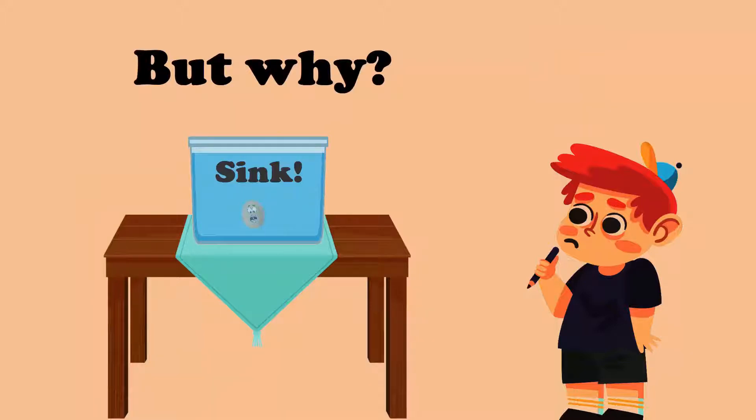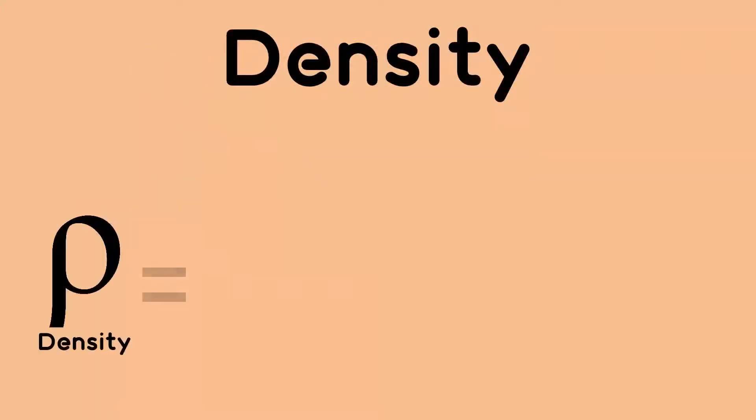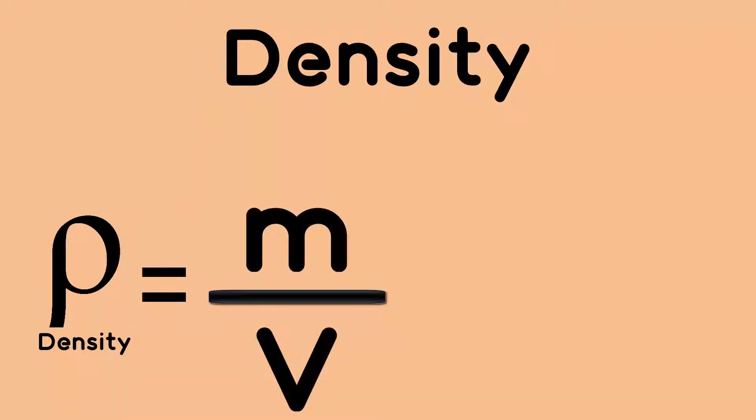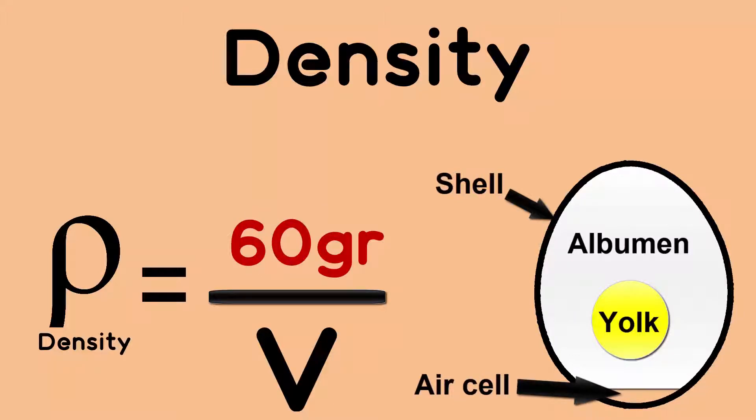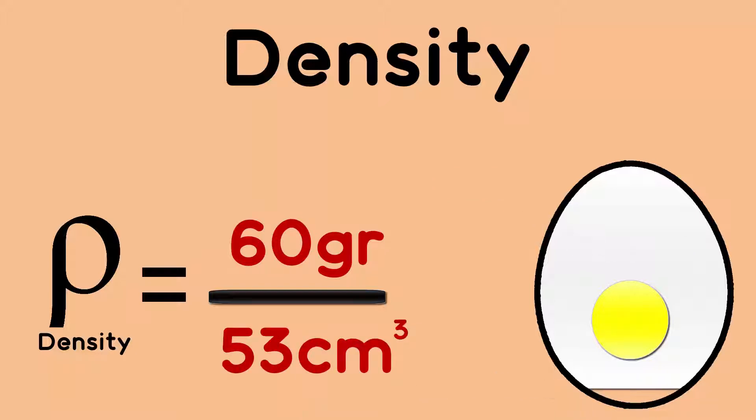We can explain this with a characteristic property called density. Density is the amount of mass which can keep in a given volume. In the case of our fresh egg, it has the shell, the albumen, the yolk, and the air cell, that all together weighs around 60 grams, which keep in its egg volume approximately 53 cubic centimeters.